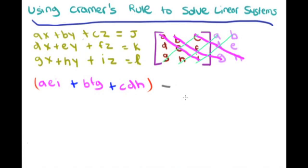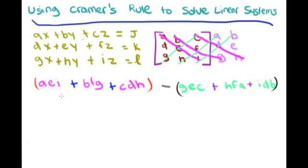Then we subtract the products of the other three diagonals: g×e×c, plus h×f×a, plus i×d×b. So basically we add the products of the three forward diagonals and then subtract the products of the three backward diagonals. That is how we find our determinant.